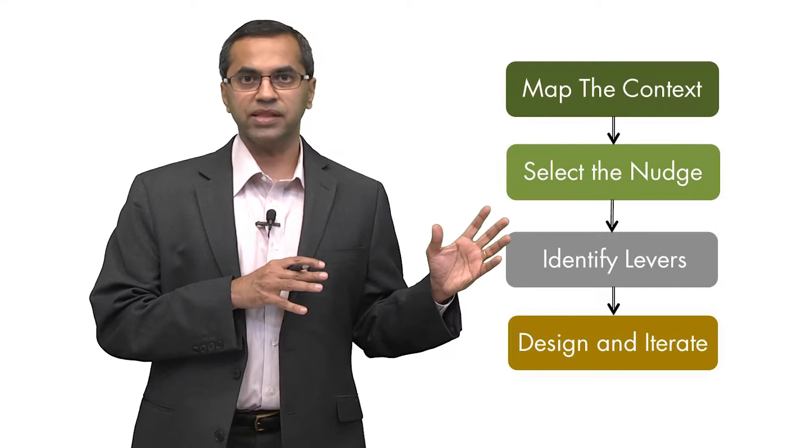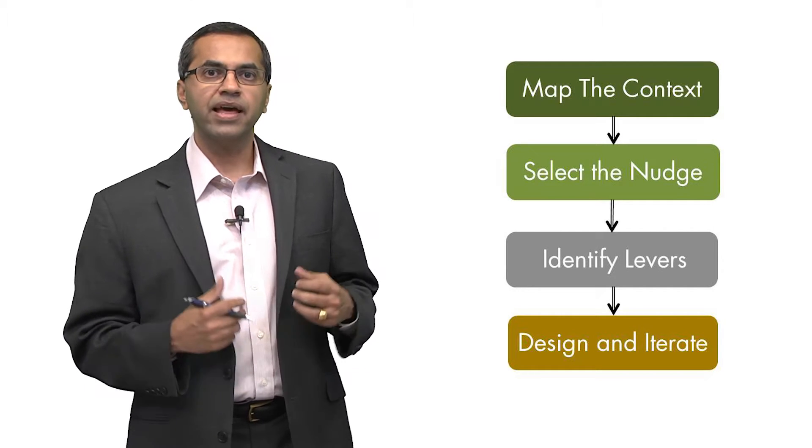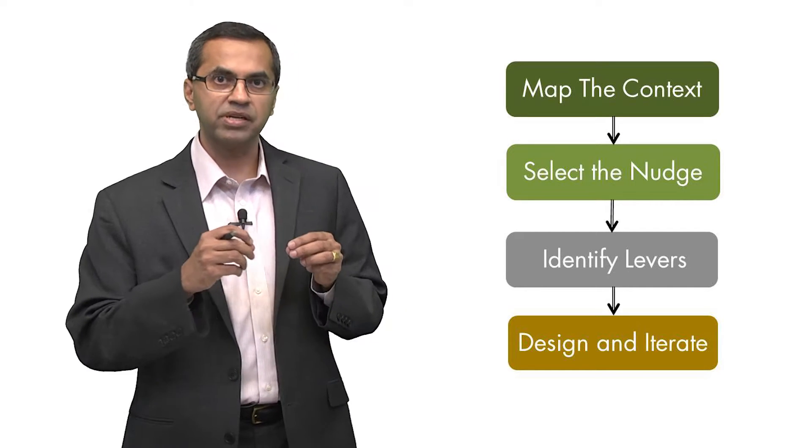We've talked about the first two, and at the end of those two stages, what you've now got is a diagram that represents decision-making over time, as well as a set of nudges that you could potentially implement at each stage. It's now time to think about specific ways in which we can implement those nudging strategies.